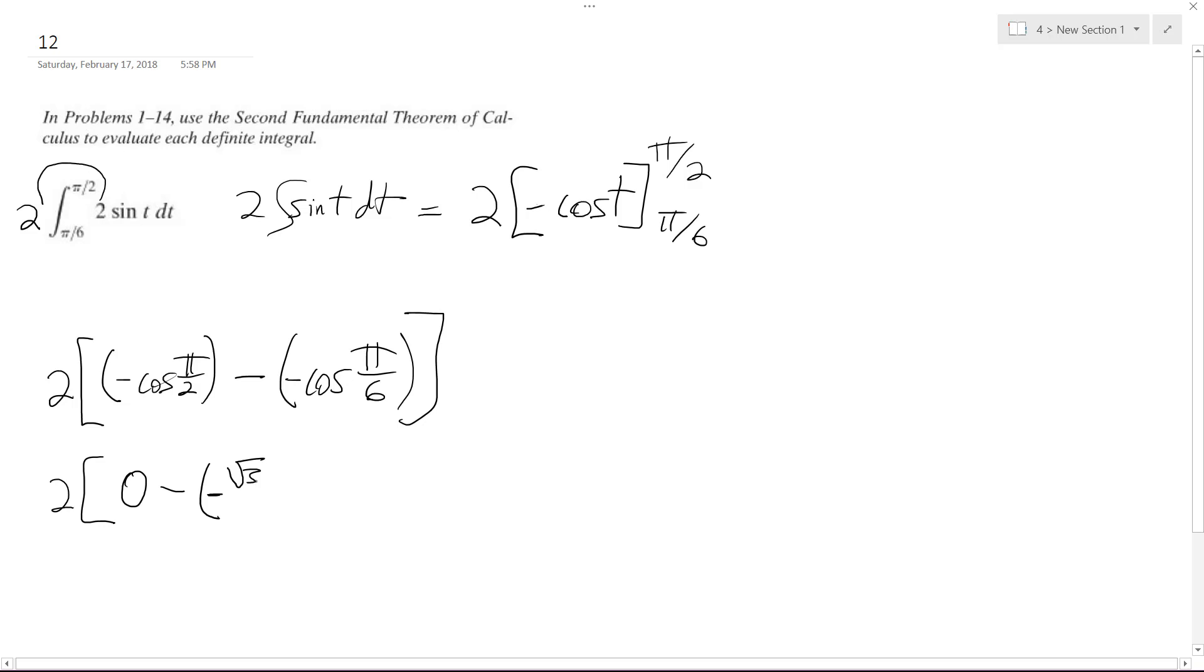And this is negative because of the negative coefficient here. And so this becomes 2 times positive square root of 3 over 2 because the negatives cancel out. Multiply by the 2, and we're simply left with the square root of 3.